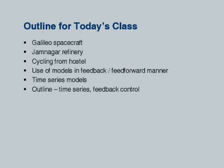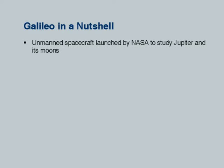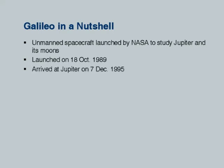Most likely I will be doing this in the next class. So here is the Galileo spacecraft. It was launched by NASA to study Jupiter and its moons. It was launched on 18th October 1989 — I think all of you were born after this. It arrived at Jupiter on 7th December 1995, so it took more than 6 years to reach Jupiter. It was going round and round to study Jupiter and its moons.